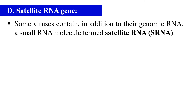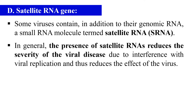Next are satellite RNA genes. Some viruses also contain a very small RNA molecule known as satellite RNA, or sometimes called sRNA. This satellite RNA requires a helper virus for its replication, and the sRNA does not form the coat protein — it is encapsulated in the coat protein of the helper virus. In the presence of satellite RNA, the severity of viral disease is decreased due to interference with viral replication, ultimately reducing the effect of the virus.